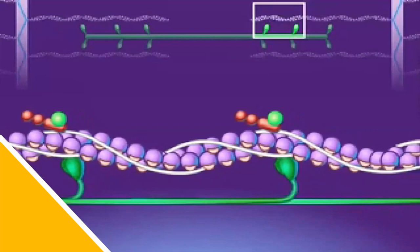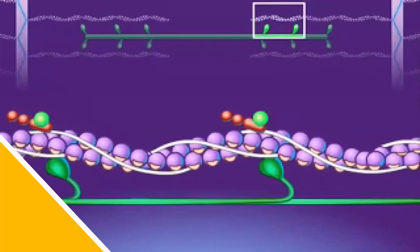Energy stored in the myosin head is used to move the head, causing actin to slide past. ADP is released as myosin moves. The actin-myosin bond is broken when an ATP molecule binds to the myosin head, and this ATP is broken down into ADP and phosphate, releasing energy which is stored in the myosin head and will be used later for movement. The head returns to its upright position and is ready to bind to actin again.